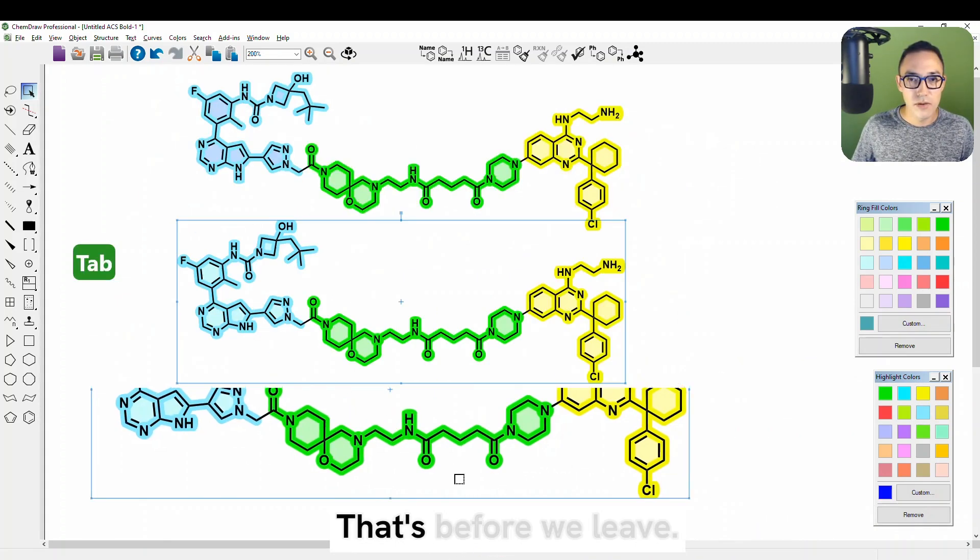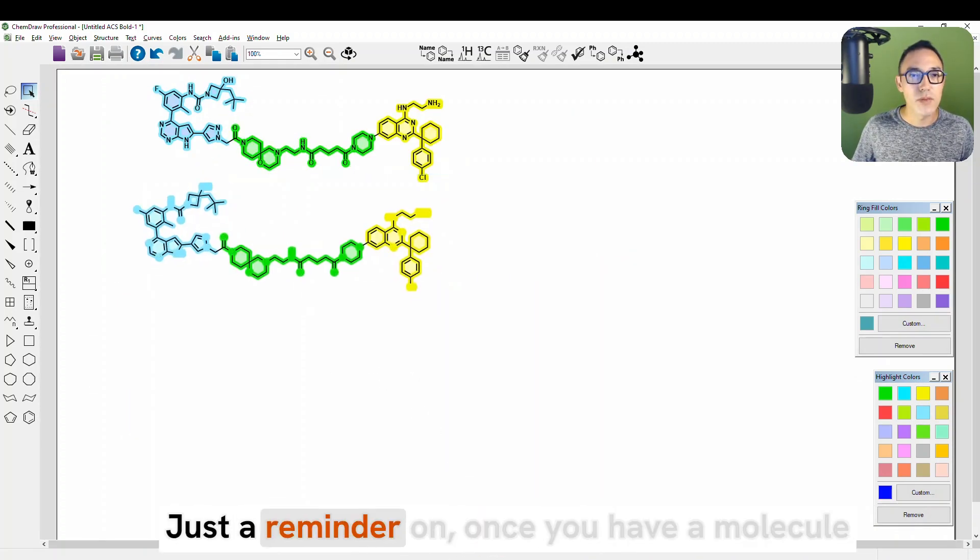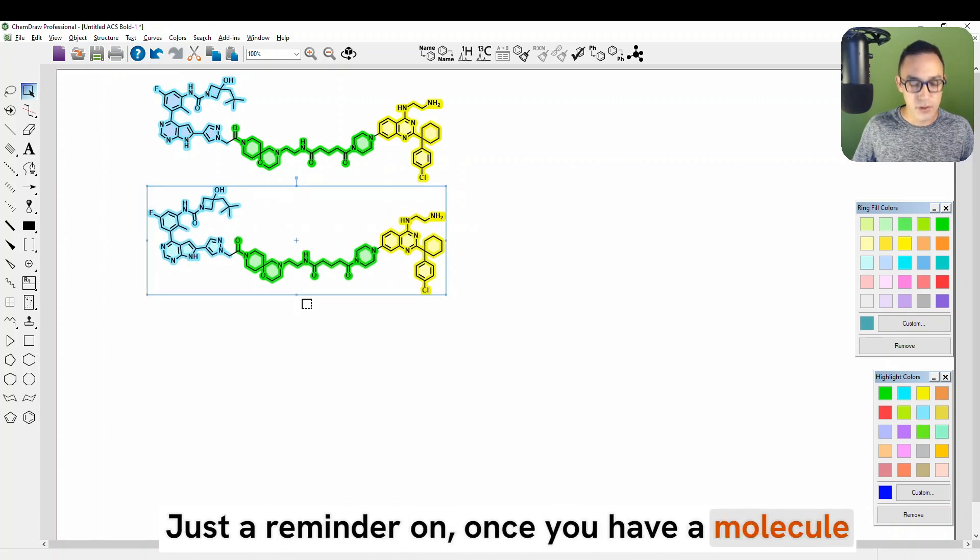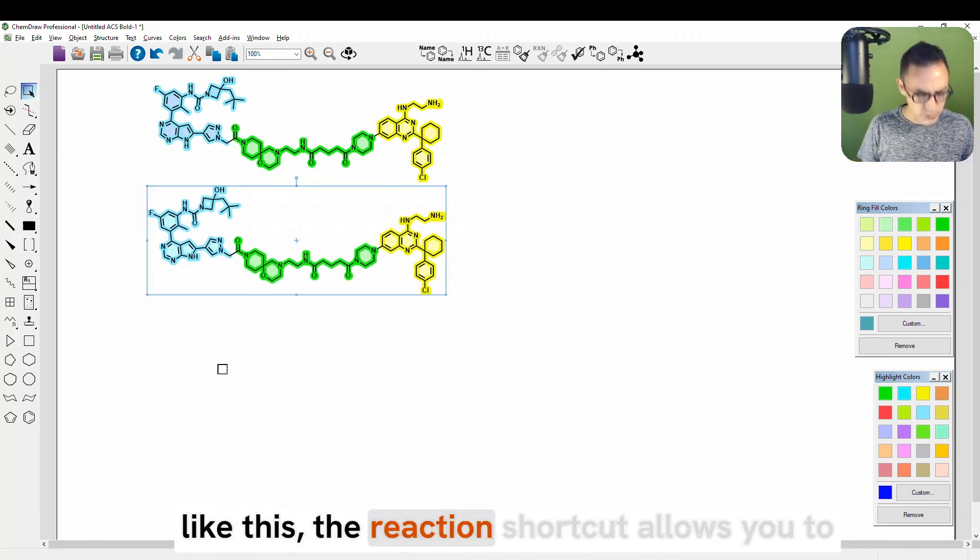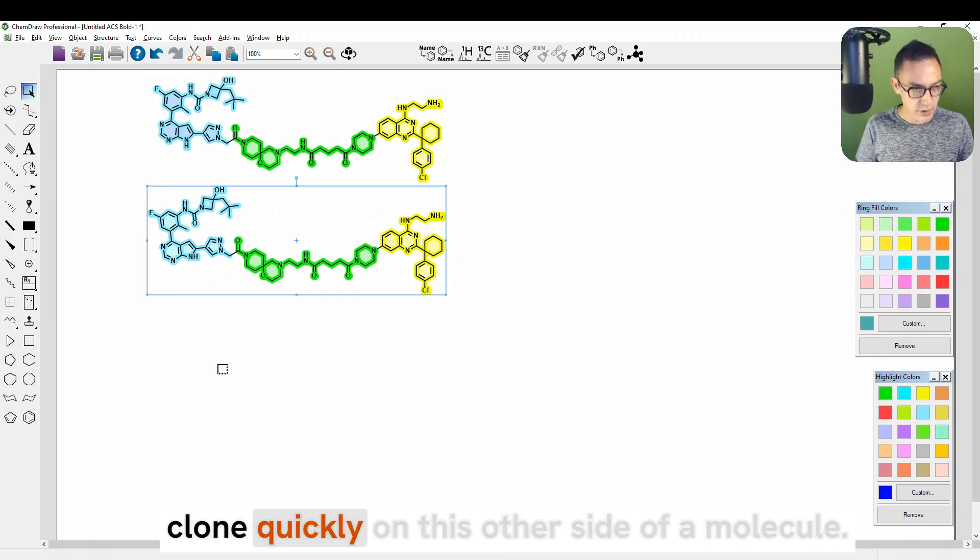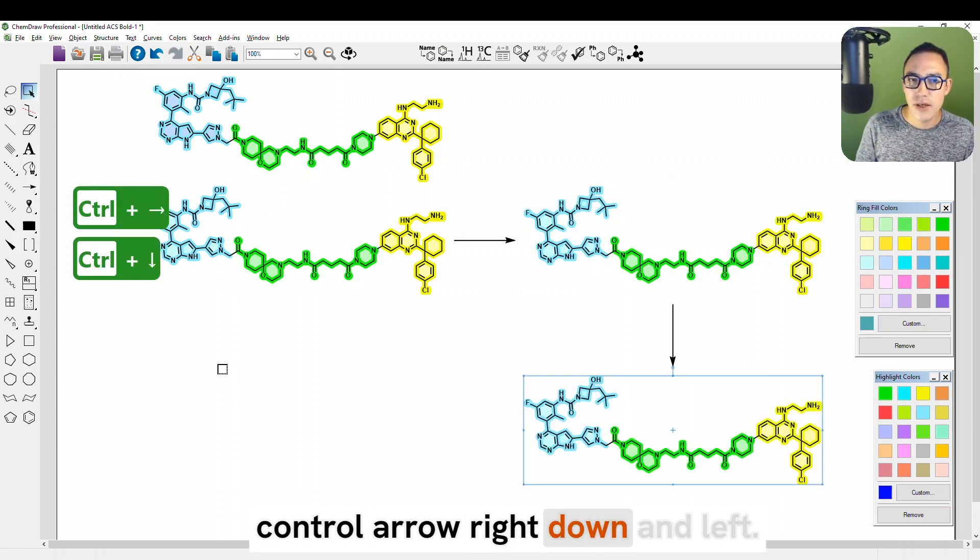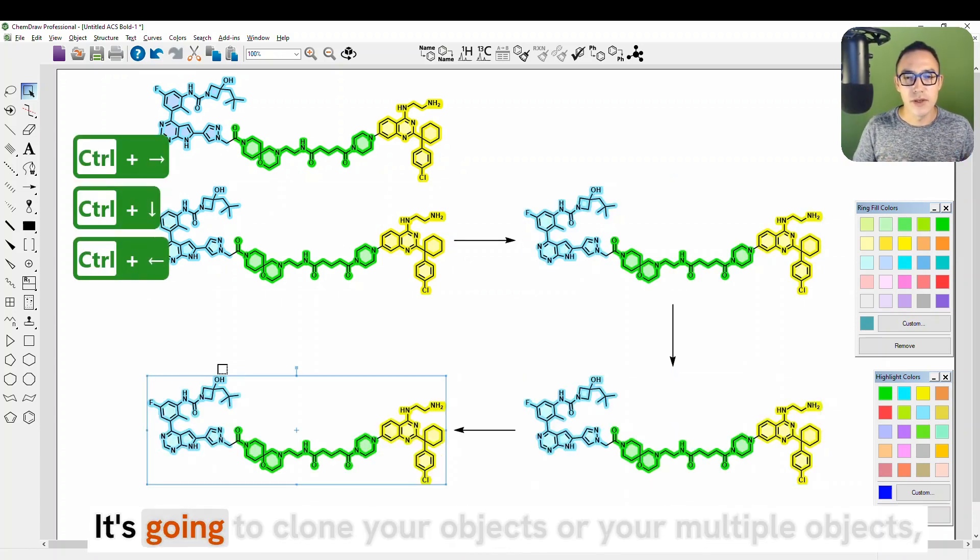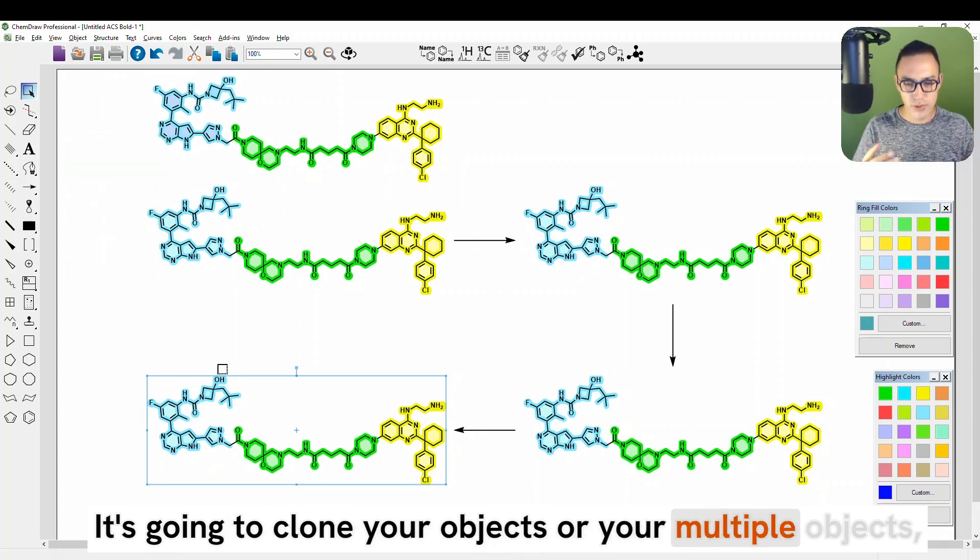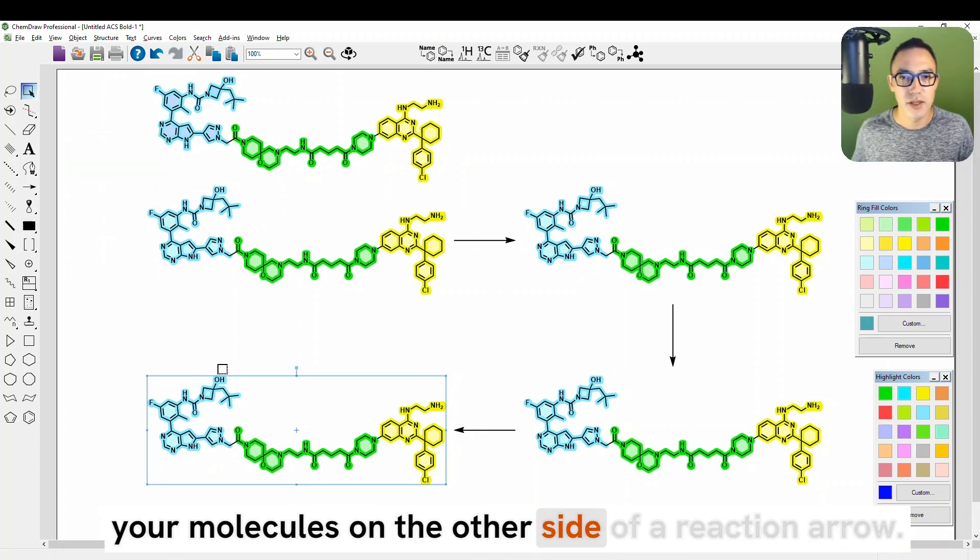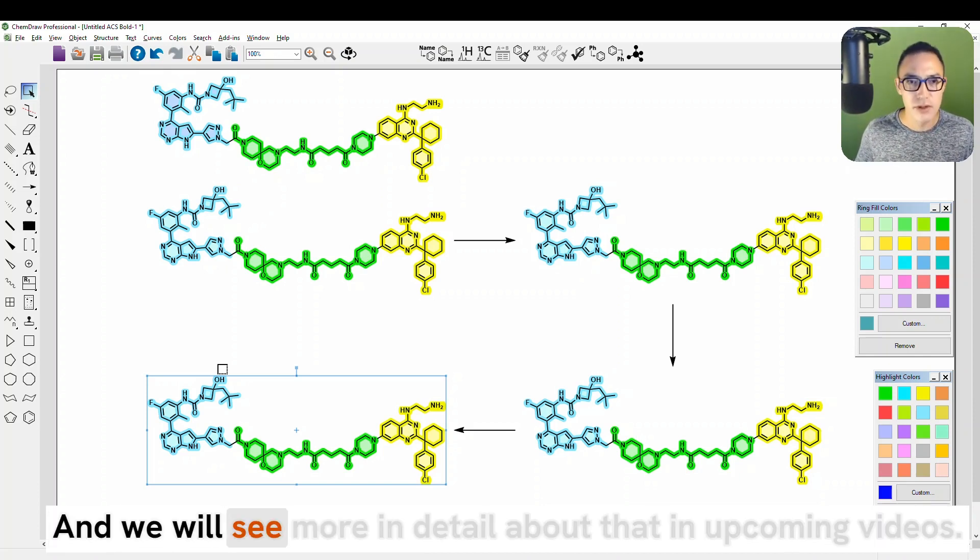That's before we leave. Just a reminder, once you have a molecule like this, the reaction shortcut allows you to clone quickly on the other side of a molecule. So you select the molecule, you do CTRL-ARROW-R right, down, and left. It's going to clone your object or your multiple objects, your molecules on the other side of a reaction arrow. And we will see more in detail about that in upcoming videos.